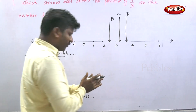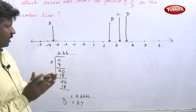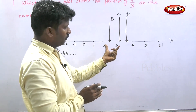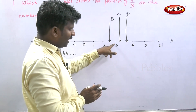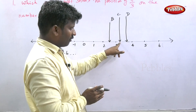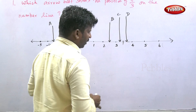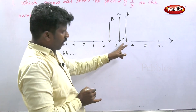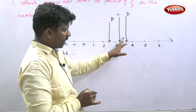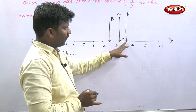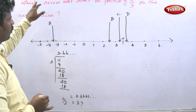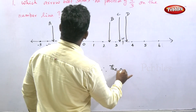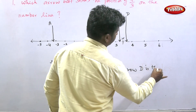So 11 by 3 is between 3 and 4, closer to 3.7. Looking at the number line, the midpoint between 3 and 4 is 3.5. Since 3.7 is after 3.5, the arrow D, which is after the midpoint, must be the best answer. Which arrow best shows the position of 11 by 3? The answer is arrow D.